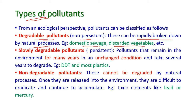The second type — slowly degradable pollutants — are persistent pollutants that remain in the environment for many years in an unchanged condition. They take several years to degrade. For example, DDT and most other plastics come under the slowly degradable pollutants.